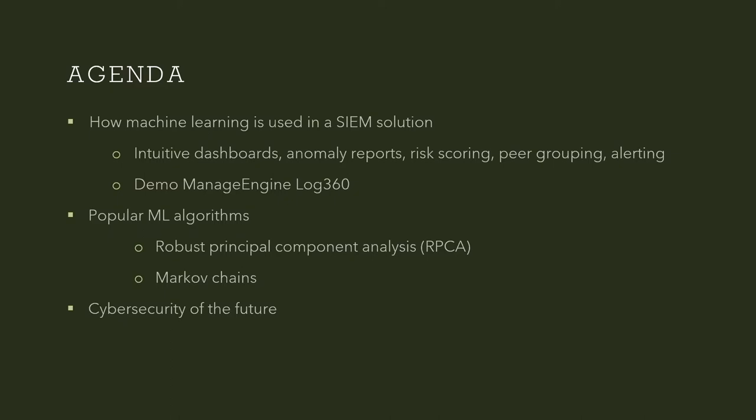We'll also discuss how attackers can use AI and ML to further their nefarious activities and how organizations can use AI and ML to defend themselves — so yes, it goes both ways. This is what we have in store for the next 35 minutes. Without any further delay, let's talk about how machine learning is used in Log360 to detect anomalies. I'll be jumping into the console of Log360 right now.